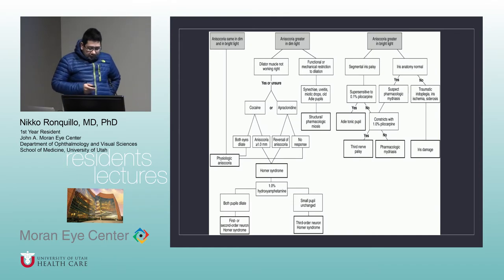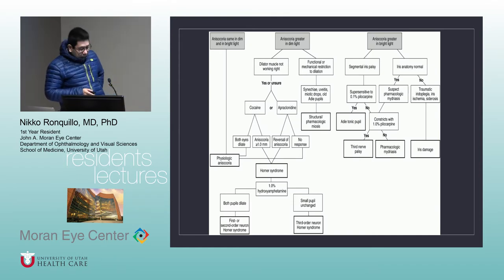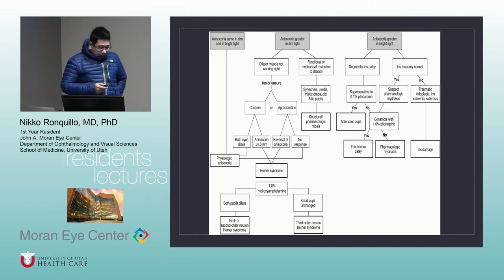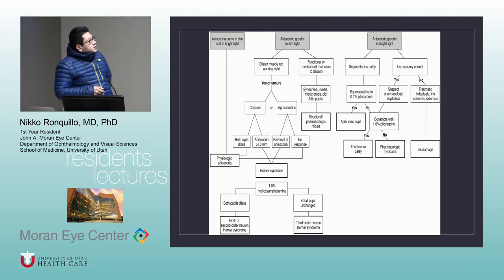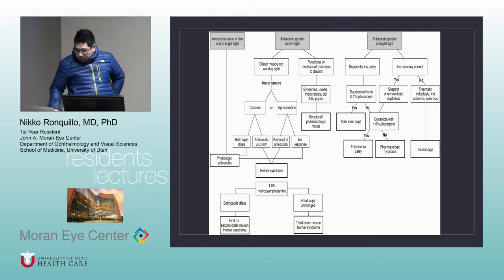This is a very important chart from the BCSC which I'll go over little by little. For anisocoria that is the same in dim and bright light, it's usually physiologic anisocoria. I'll talk first about the pathway of anisocoria greater in bright light.